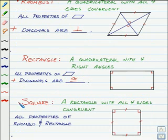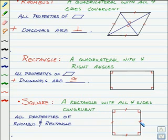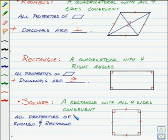Our next quadrilateral is a square. A square is a rectangle with all four sides the same length — all four sides congruent. It has all the properties of a rhombus and all the properties of a rectangle.